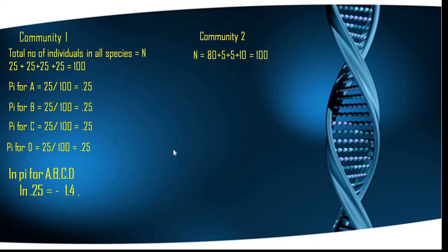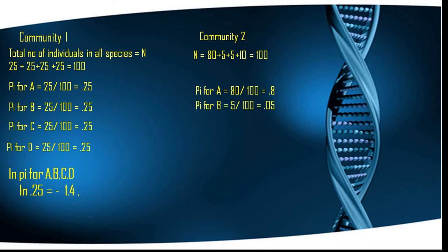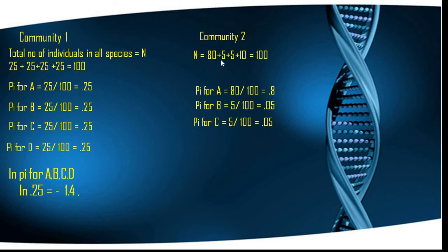For Community 2, the total number of individuals is 80 + 5 + 5 + 10 = 100. The proportion of species A is 80/100 = 0.80; for species B it is 5/100 = 0.05; for species C it is 5/100 = 0.05; and for species D it is 10/100 = 0.10.